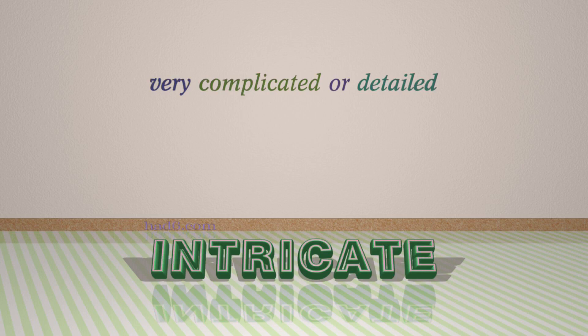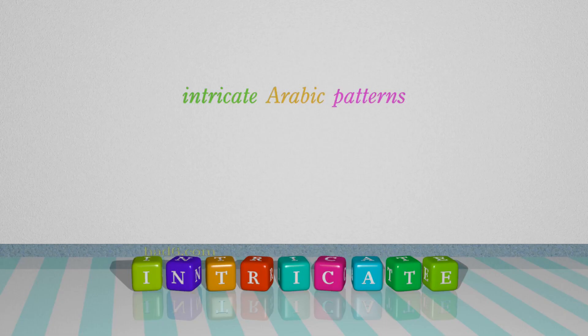Number 5: Intricate. Which means very complicated or detailed. For example: intricate Arabic patterns.